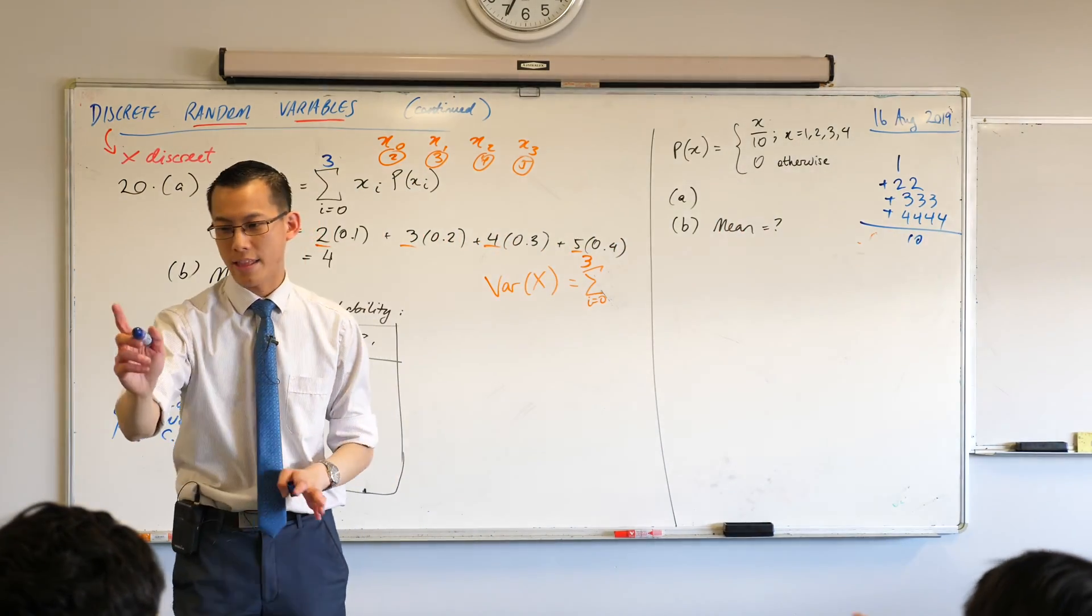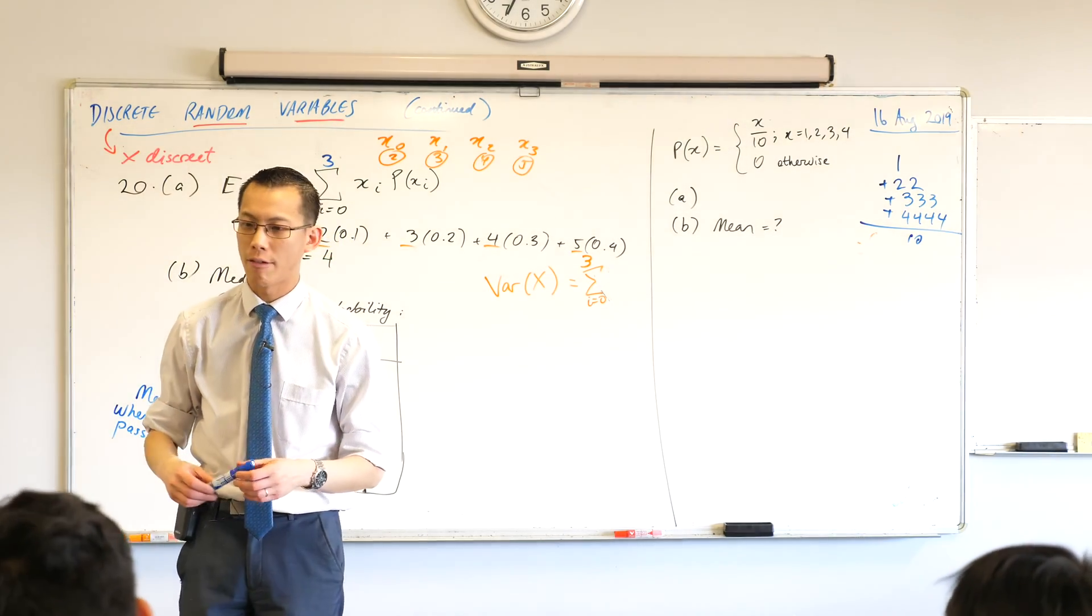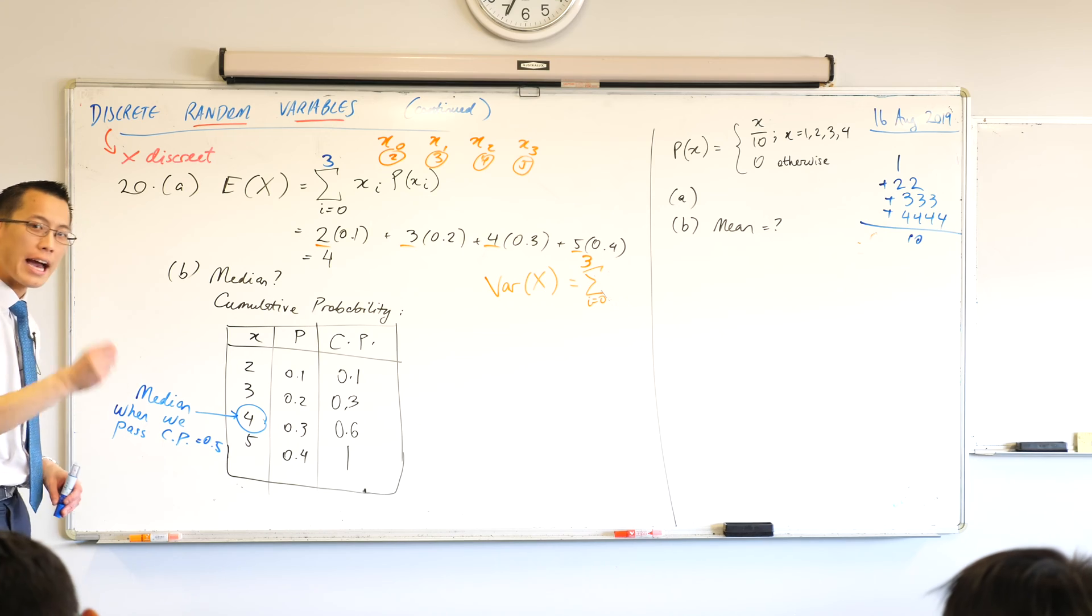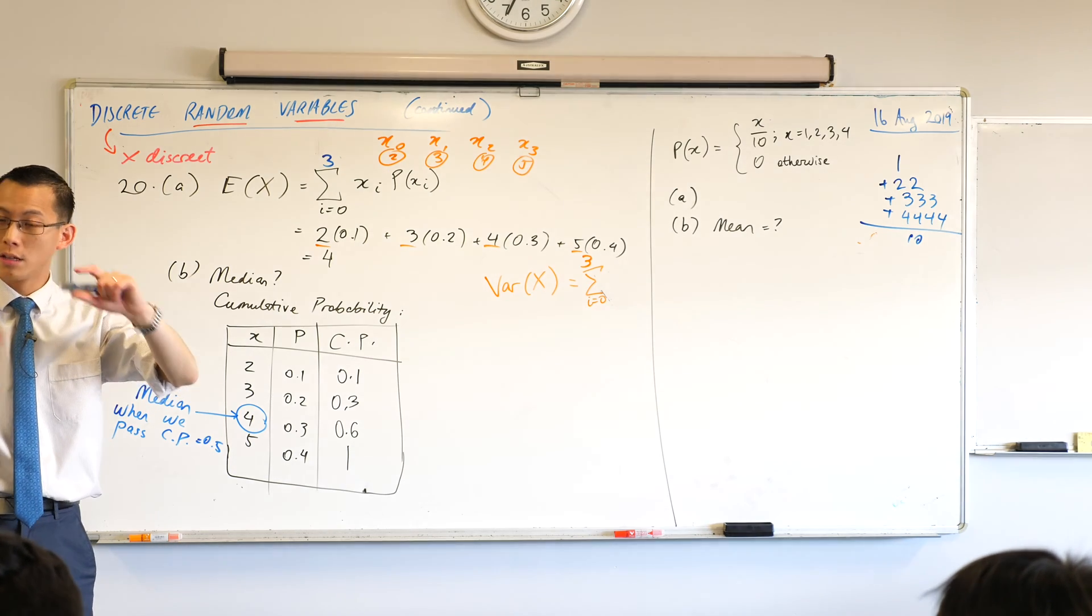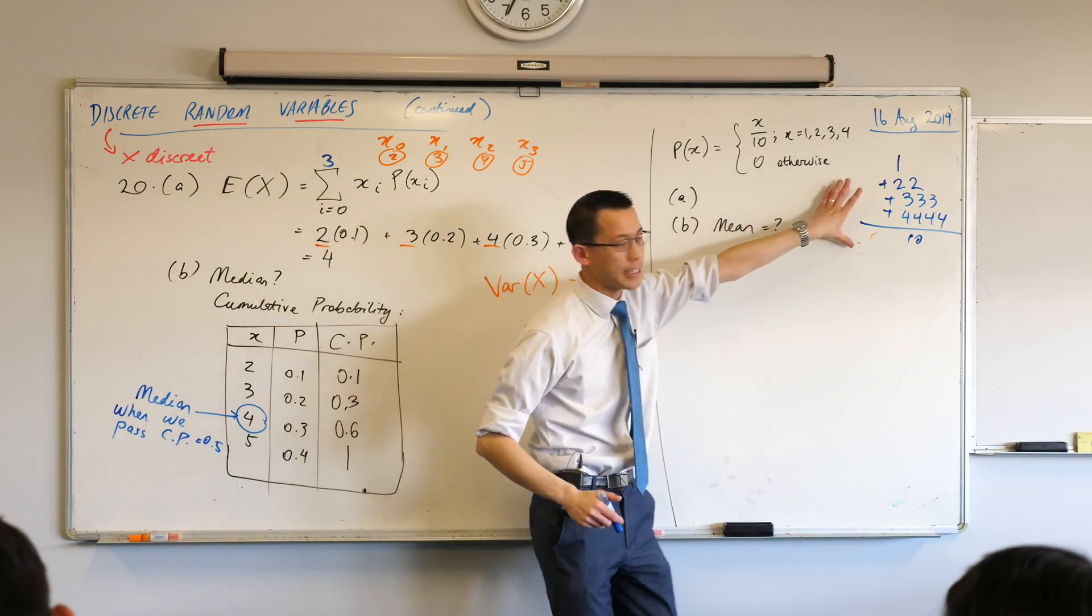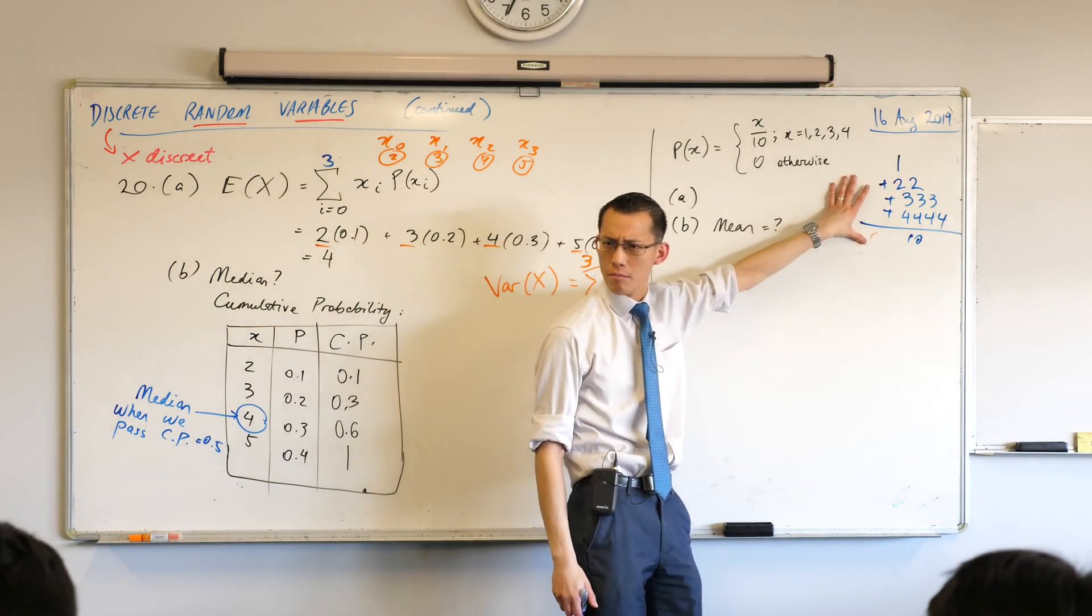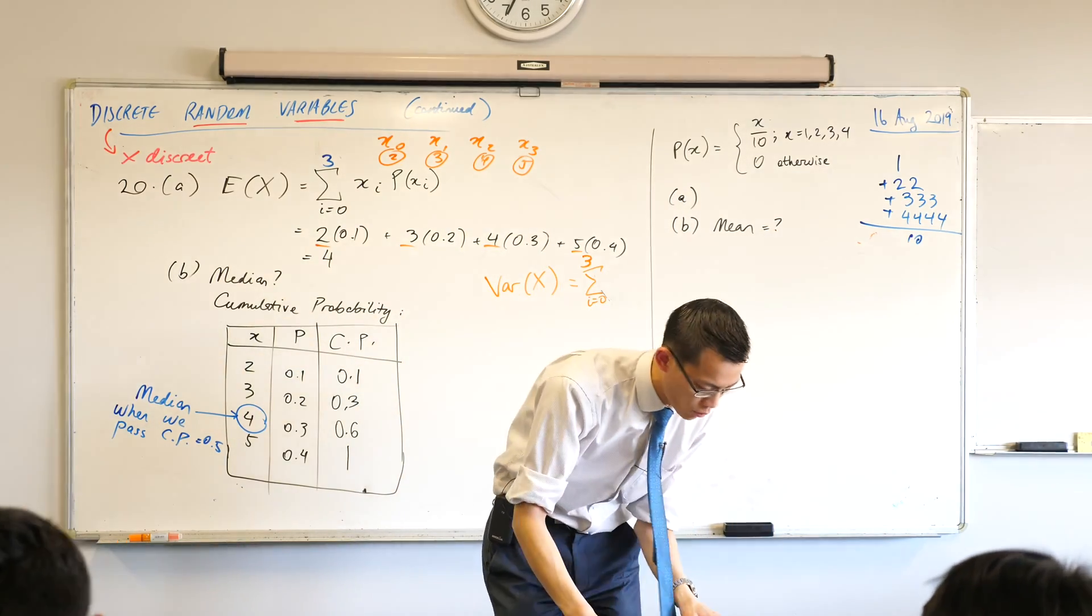Now, I want you to look closely at the previous page when you calculated expected value. Go back and have a look at that. When you calculate expected value, look at your first line of working, not the answer. Look at your first line of working. Did you notice this is exactly what you're doing? You see that? Like that over ten, you've got decimals in your thing, like, what were they? 0.1, 0.2, etc.